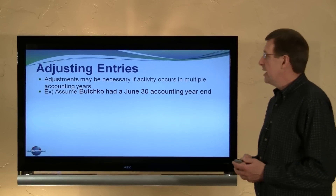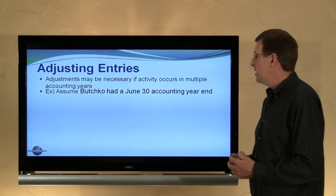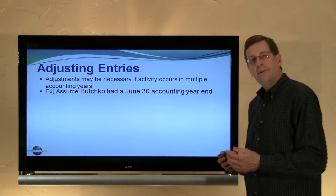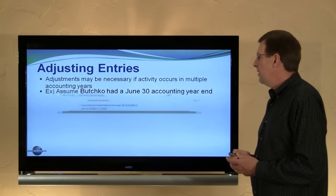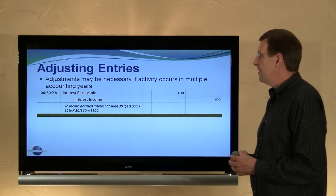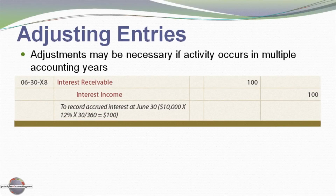Like many other transactions, notes receivable may give rise to adjusting entries for accrued interest. The $10,000 note came into existence on June 1. Assume a June 30 year-end — in this case we record interest for one month at June 30, which is $100 of interest. We debit interest receivable and credit interest income to reflect accrued interest income and the related receivable.